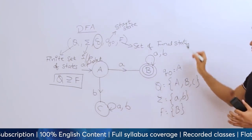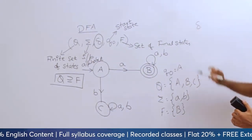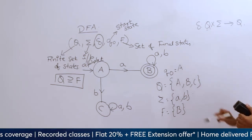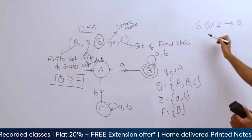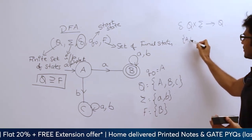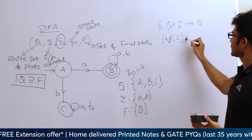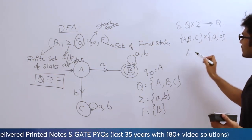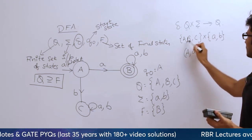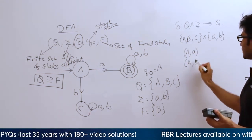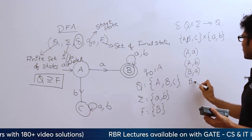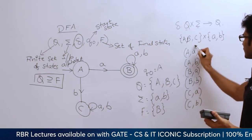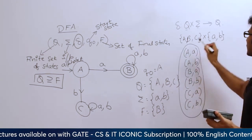Delta is the transition function from Q × Sigma to Q. Q is the set of all states and Sigma is the input. So Q × Sigma is {A,B,C} × {a,b}, giving pairs: (A,a), (A,b), (B,a), (B,b), (C,a), (C,b). Capital A on seeing small 'a' goes to capital B. Capital A on small 'b' goes to C. Capital B on small 'a' goes to B. Capital B on small 'b' goes to B. Capital C on small 'a' goes to C, and C on small 'b' goes to C.